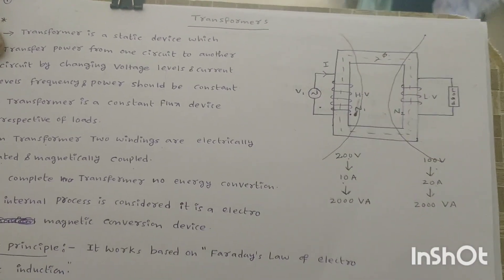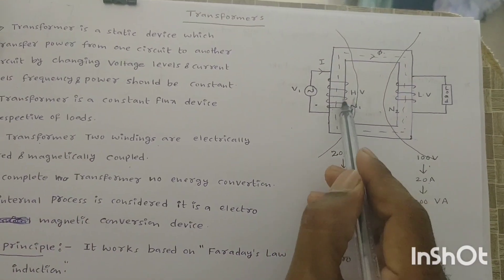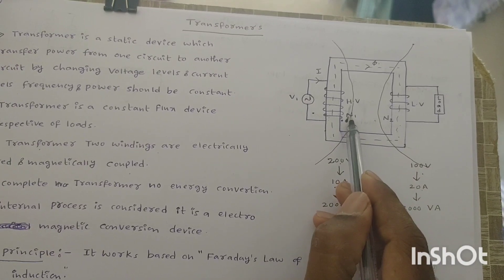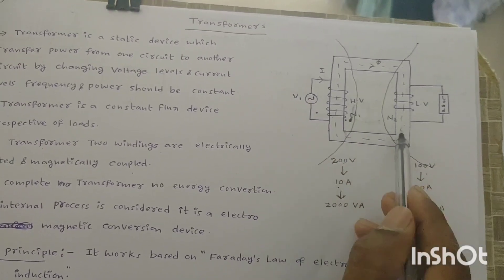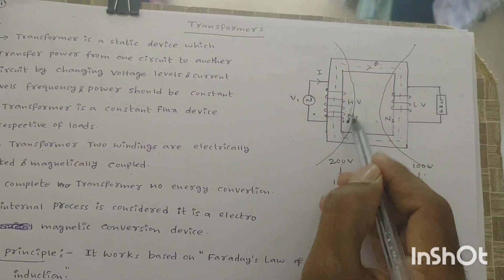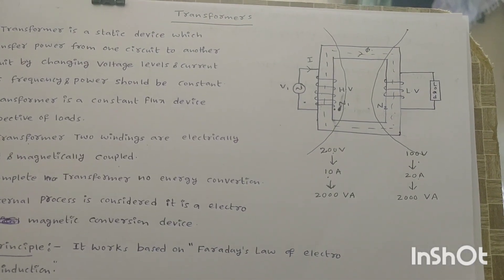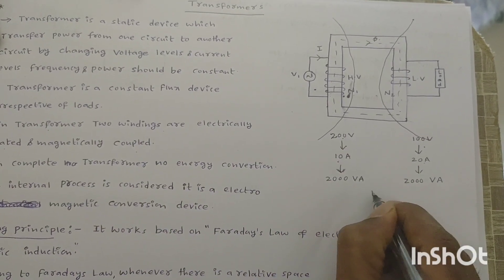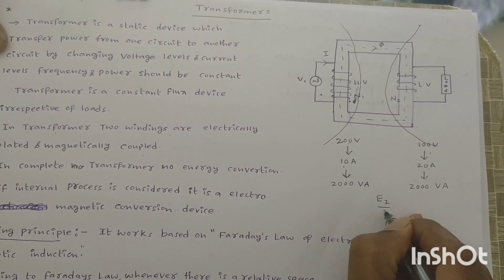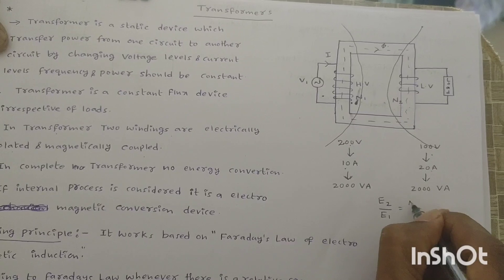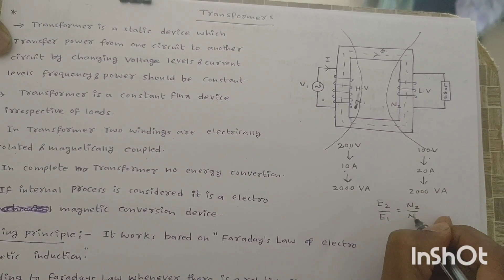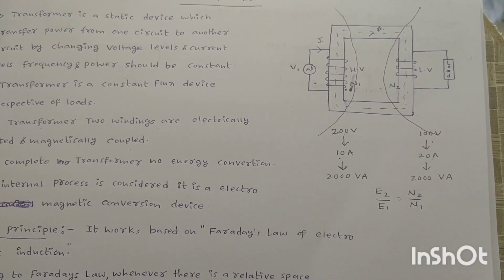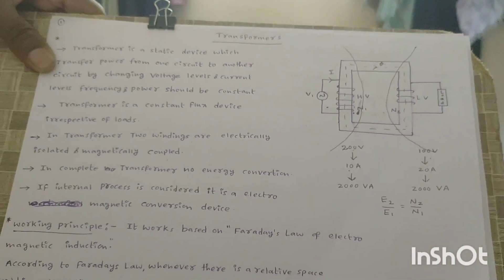In the complete transformer, no net energy conversion takes place; it is an electromagnetic energy conversion device. The primary winding has N1 number of turns and the secondary winding has N2 number of turns. If the number of turns is more, it is a high-voltage winding; if the number of turns is less, it is a low-voltage winding. The relationship is: E2/E1 = N2/N1, meaning induced EMF depends upon number of turns — more turns means higher induced EMF, fewer turns means lower induced EMF.